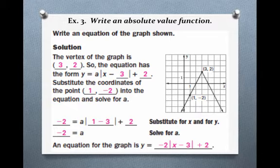What we're going to do is take one of the known coordinates — take the X value, substitute that in for X, the Y value, substitute that in for Y, and then solve for A. We're going to substitute the coordinates of the point (1, -2), because that's the point given to us, into the equation and solve for A.